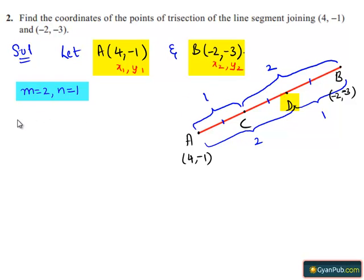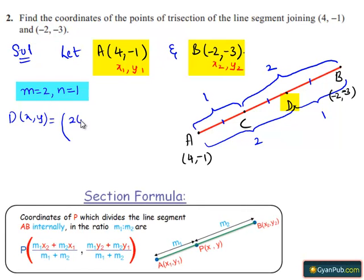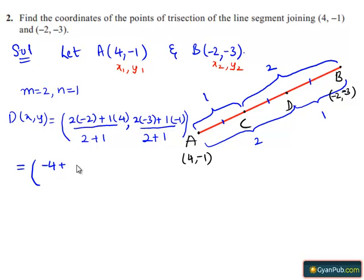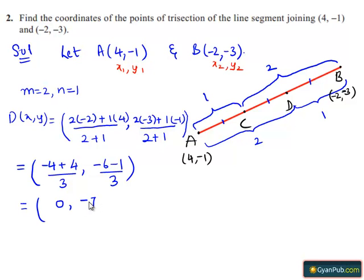D(x, y) = ( (2×(-2) + 1×4) / (2+1), (2×(-3) + 1×(-1)) / (2+1) ) = ( (-4 + 4) / 3, (-6 - 1) / 3 ) = ( 0/3, -7/3 ) = (0, -7/3).